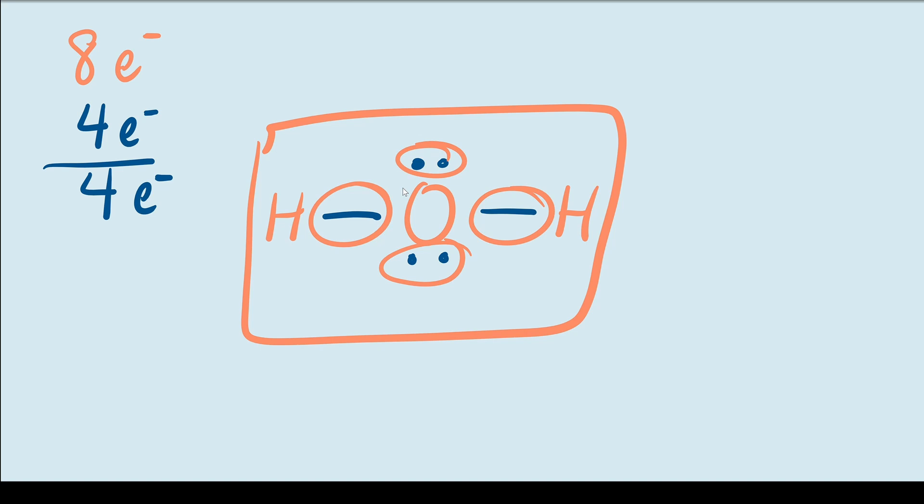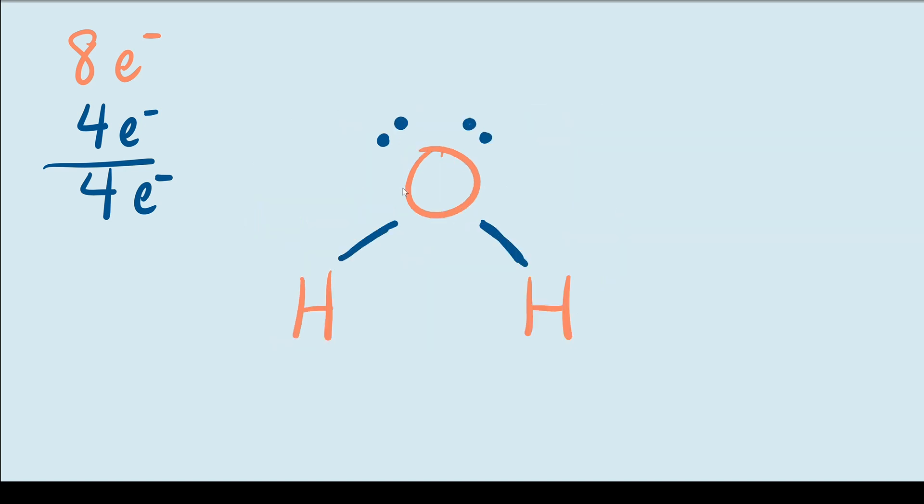Because of that they push themselves away to get as far away as possible, and so that ends up making the molecule bend and it looks more like this. This gives the molecule a tetrahedral shape and the bond angles end up being 104.5 degrees.